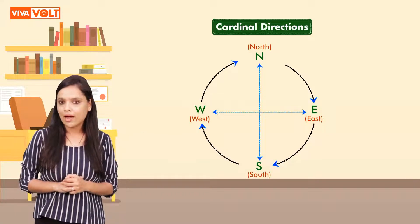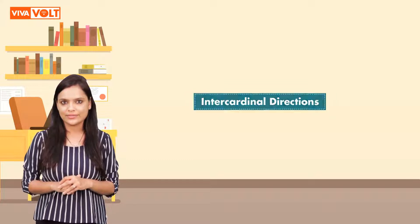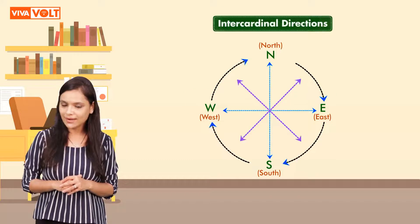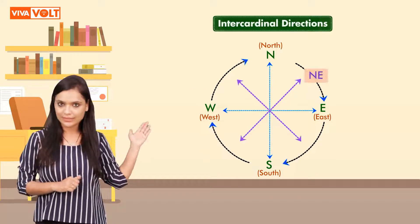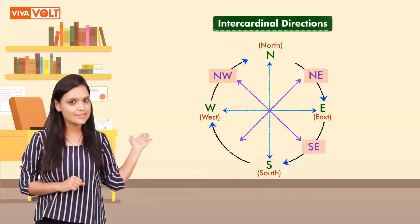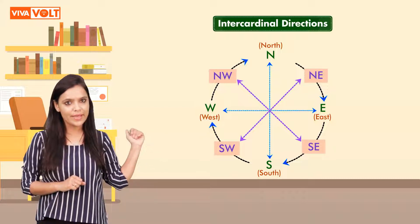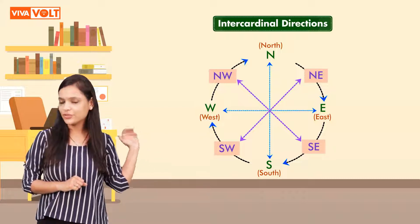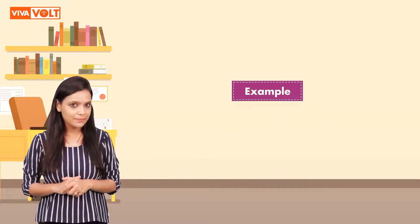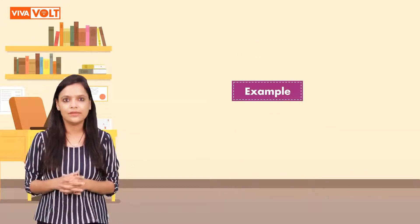There are four more directions called intercardinal directions. These are northeast, northwest, southeast, and southwest, as shown here. Let's look at an example to understand direction sense better.